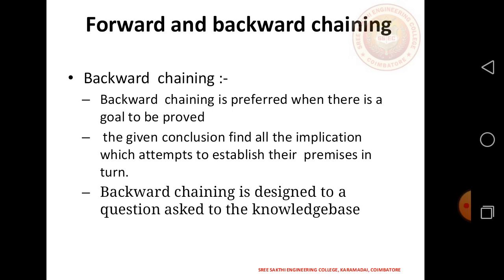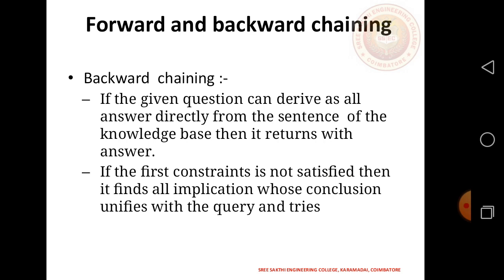Backward Chaining is performed when there are goals to be proved. Given a conclusion, it finds all the rules which lead to that conclusion and checks their premises. Backward Chaining is designed to answer questions asked to the knowledge base — if the given question can be derived as an answer directly from the sentences of the knowledge base.